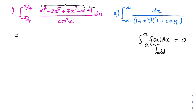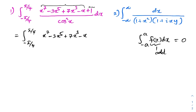So we can write: the integral from -5/4 to 5/4 of (x⁷ - 3x⁵ + 7x³ - x) over cosine squared of x, dx.